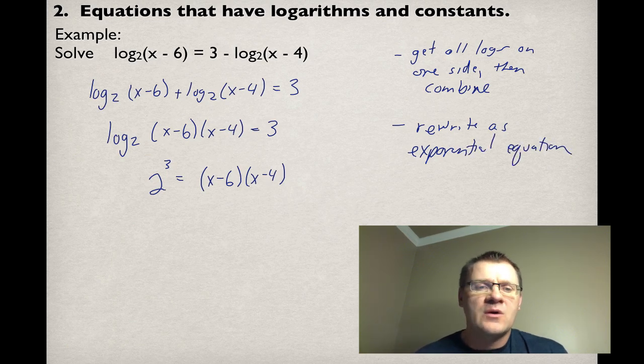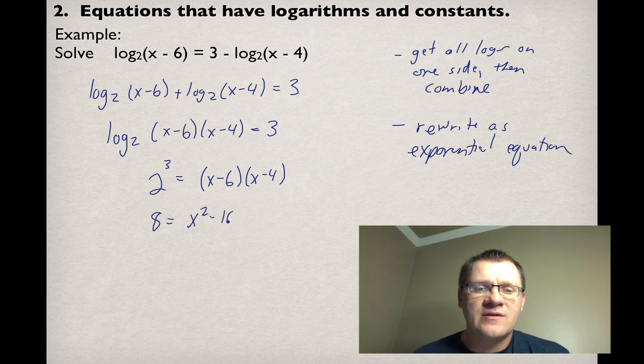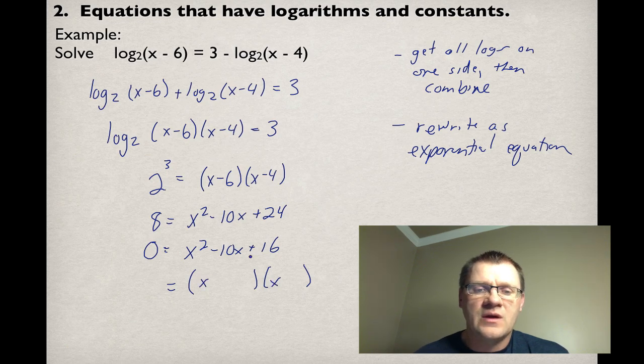We have 8 on the left-hand side and we have x² - 10x + 24 on the right. We move the 8 over to the right-hand side. We get x² - 10x + 16. That gives us 2 answers or 2 factors: -8 and -2. Two numbers that multiply to 16 but add to -10. So that means my answers are x = 8 and x = 2.